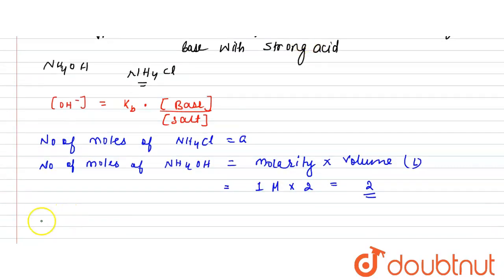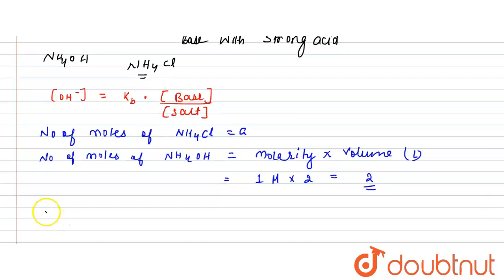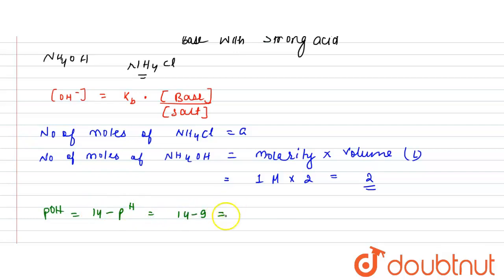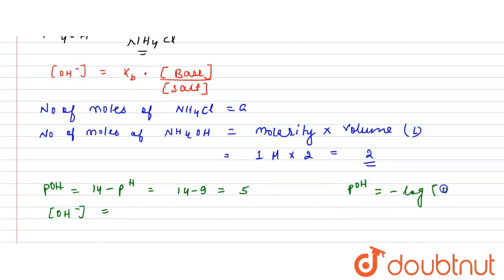Now substitute into the equation. pH is given as 9, so pOH = 14 − pH = 14 − 9 = 5. Therefore pOH = 5. From pOH = −log[OH⁻], the [OH⁻] concentration = 10⁻⁵.